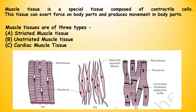Muscle tissues are of three types: A. Striated muscle tissue. B. Unstriated muscle tissue. C. Cardiac muscle tissue.